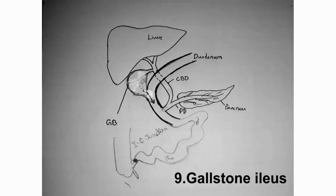Lastly, the gallbladder stone can pass into the intestine through the fistula. The stone is small enough to cause a gallstone ileus — which is intestinal obstruction. Ileus means intestinal obstruction. This is a gallstone ileus.